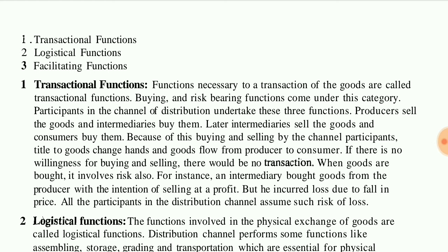Participants in the channel of distribution undertake these transactional functions. Producers sell the goods and intermediaries buy them. Intermediaries are those people who move goods from one place to another. Later, intermediaries sell the goods to consumers, and some goods may be kept for their own use. By buying and selling through channel participants, the title to goods changes hands and goods flow from producer to consumer.